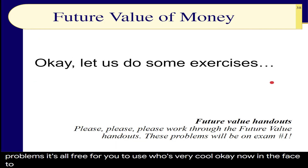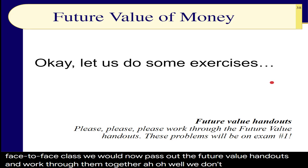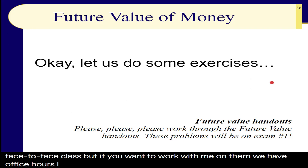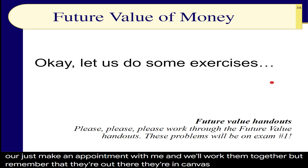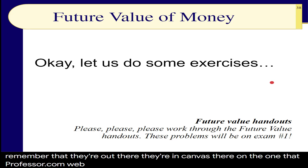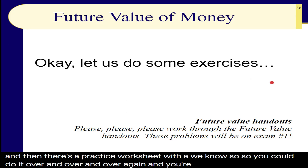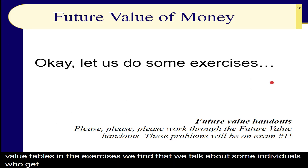In the face-to-face class we pass out the future value handouts and work through them together. Since this is online, if you want to work with me, we have office hours — or just make an appointment. The worksheets are in Canvas and on wonderprofessor.com. In the exercises, we look at individuals who get a 10% rate of return over 10, 20, 30, and 50 years. Is it realistic to think we'll get 10% over 30, 40, or 50 years? The bank might give you 1%, but you'll need to invest prudently with an eye toward long-term growth.